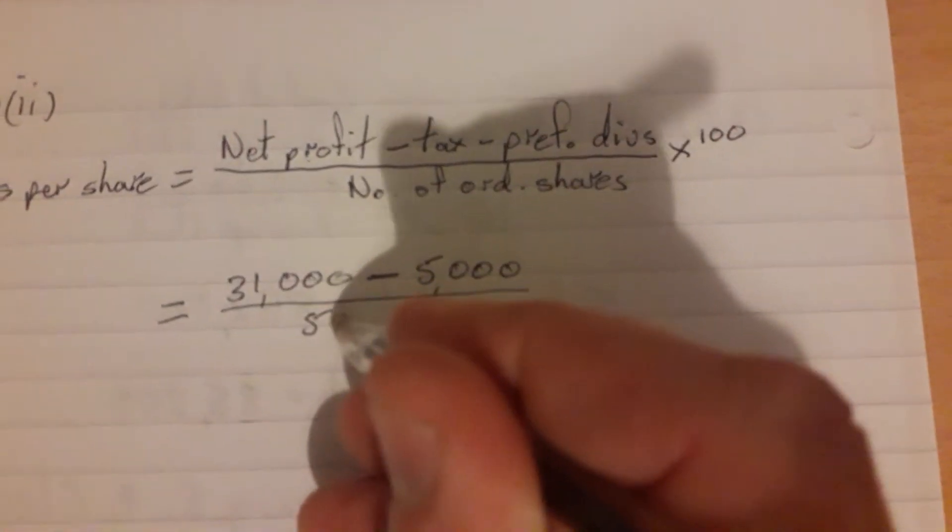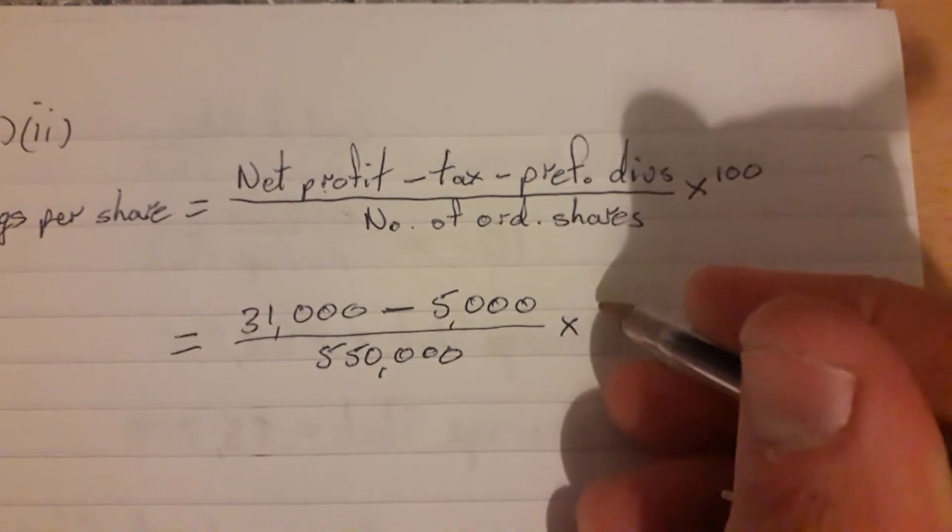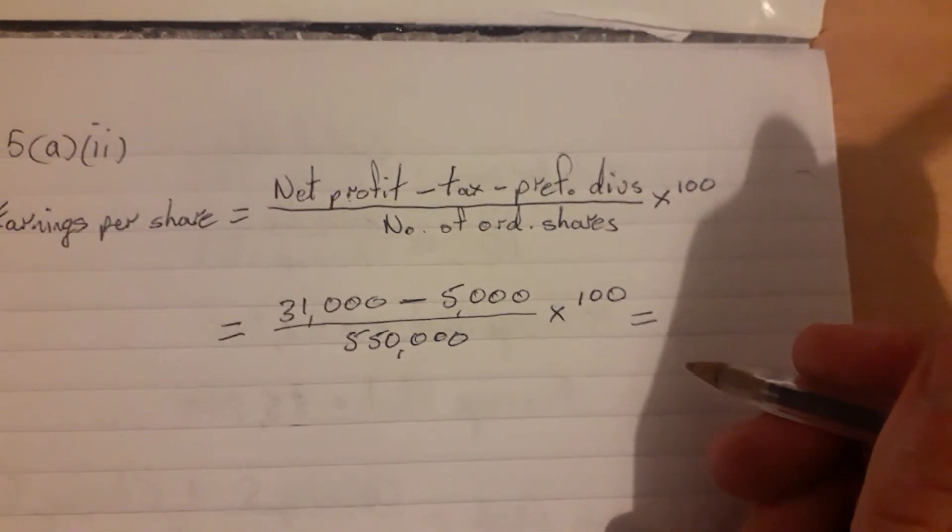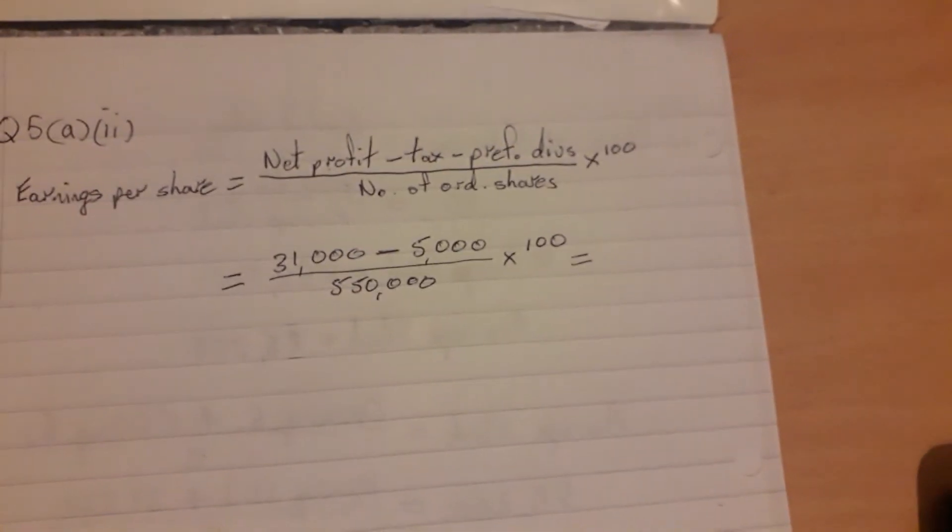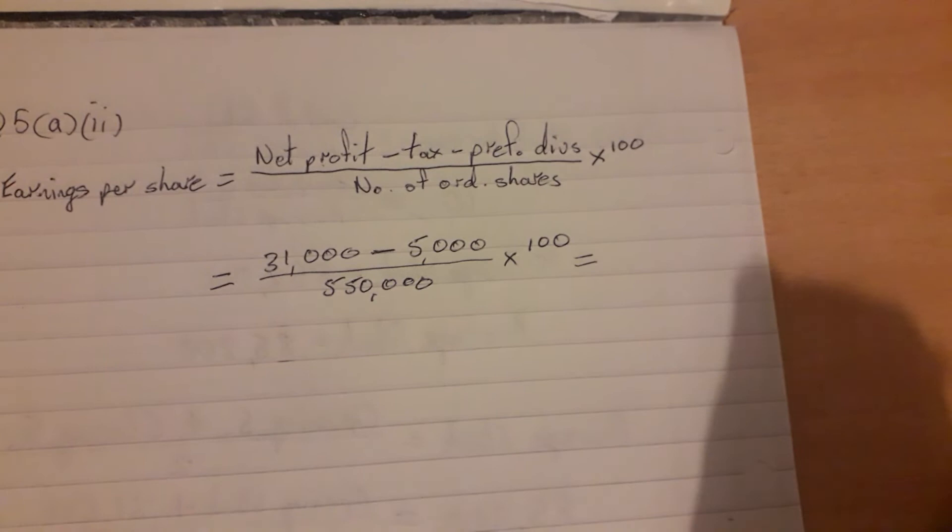So divide by 550,000 and multiply by 100. When we put all of that into the calculator, we get a figure which we're going to have to round off, and when we do we're going to get a figure of 4.73.